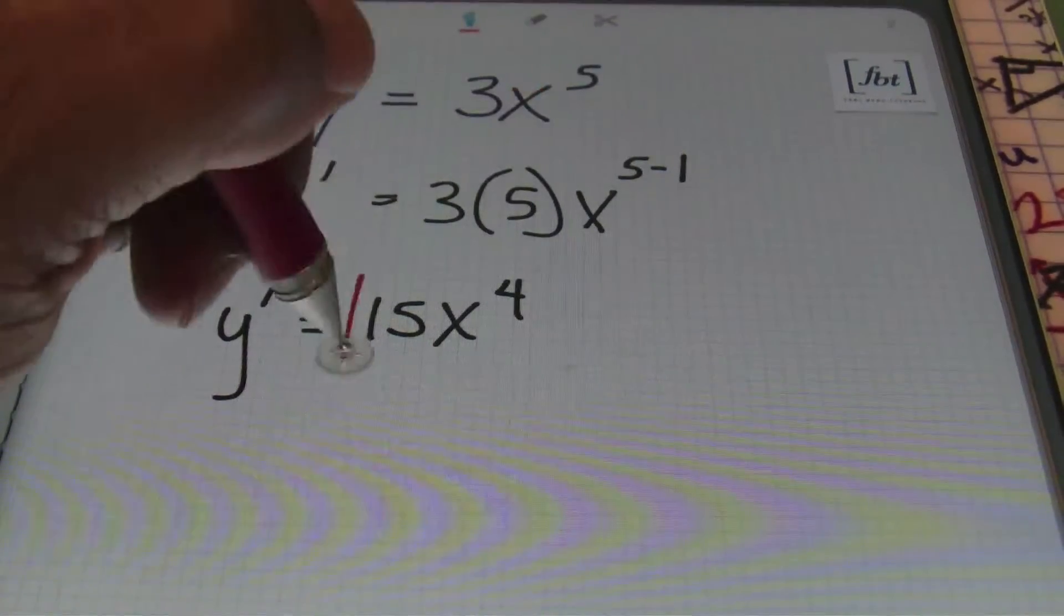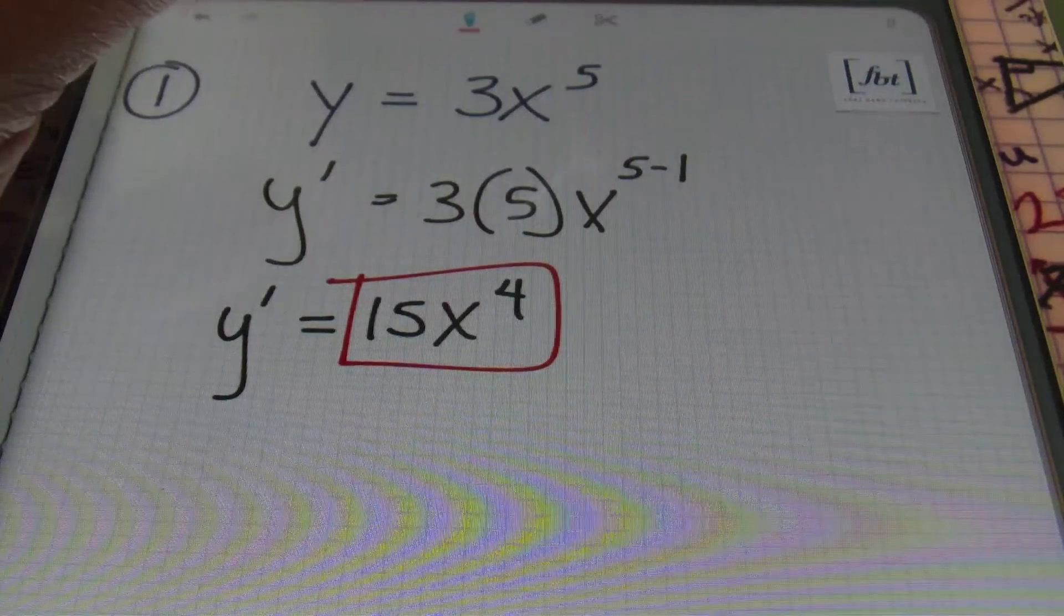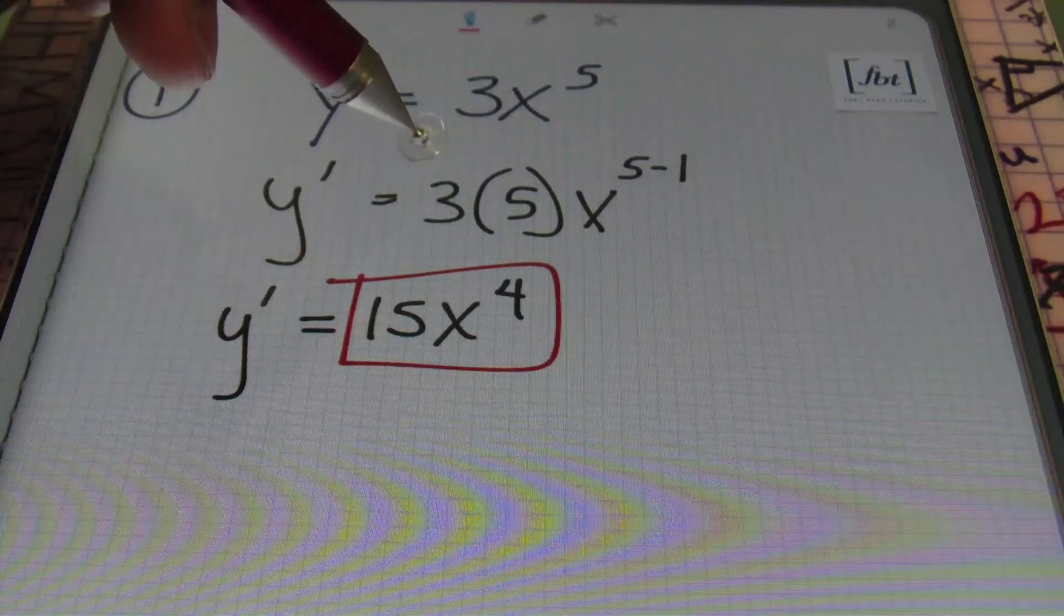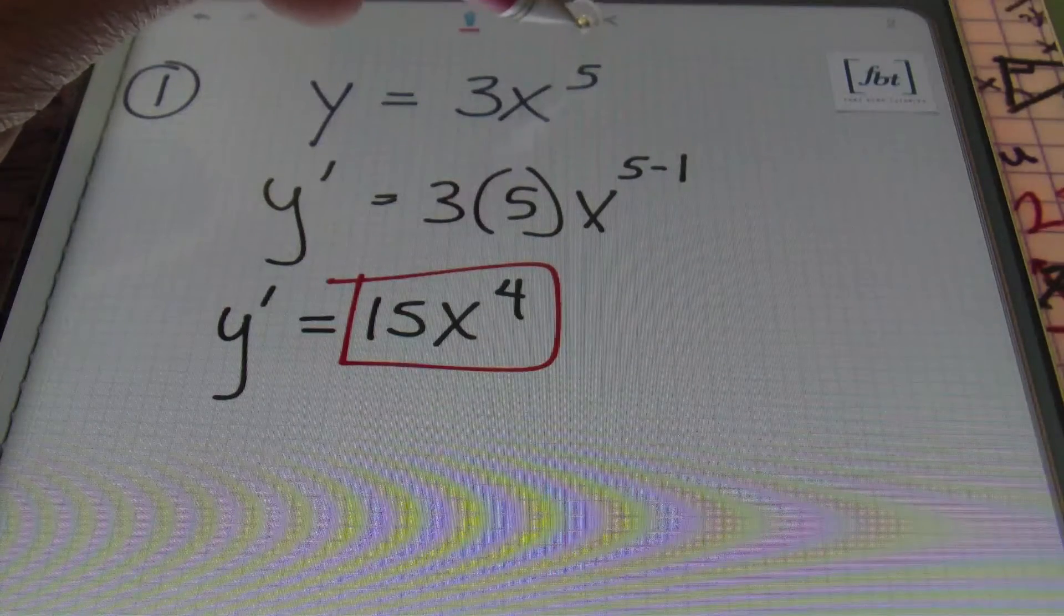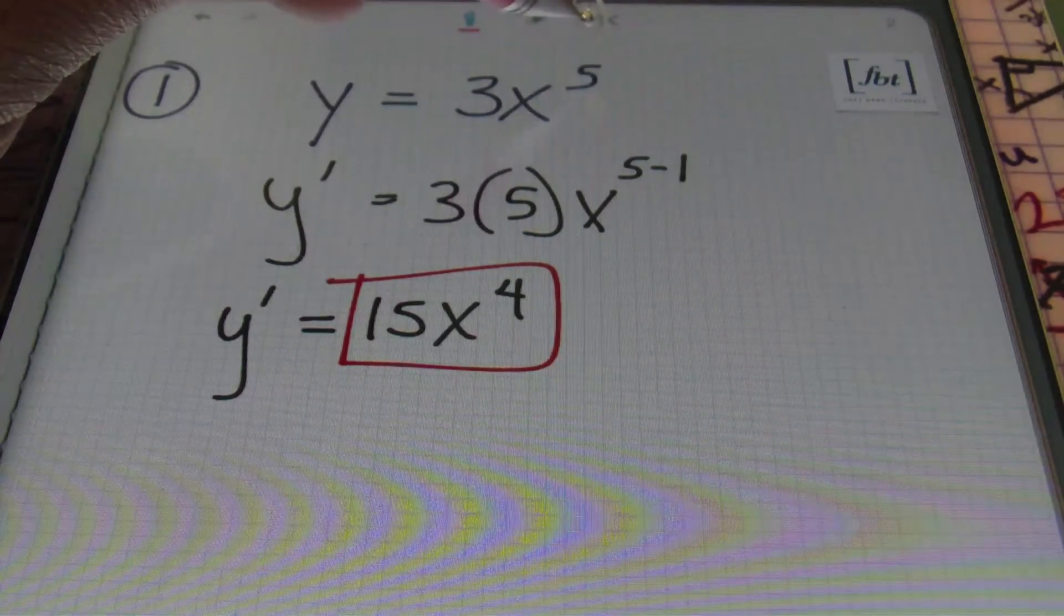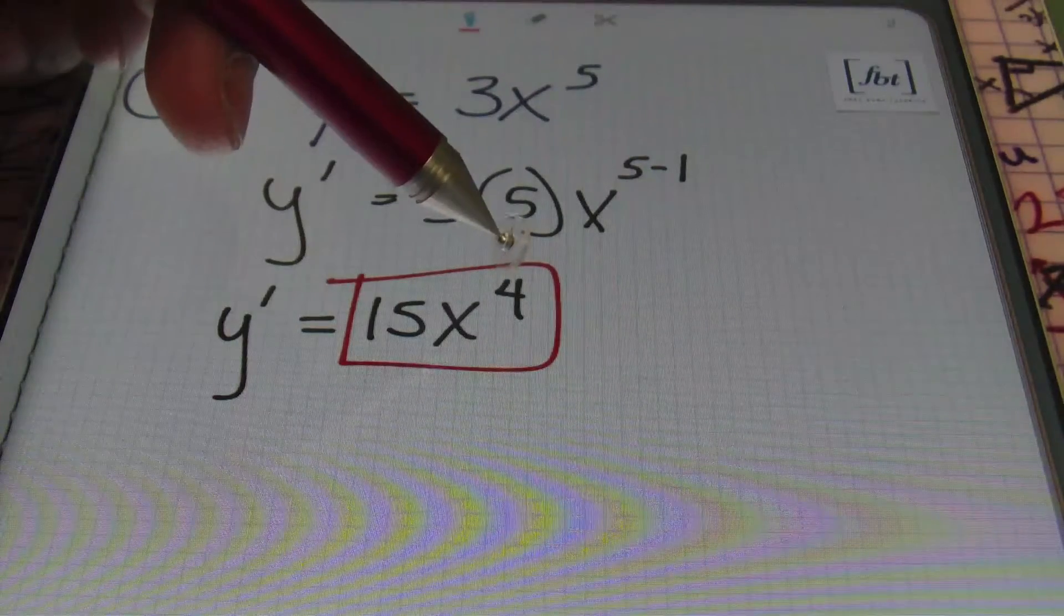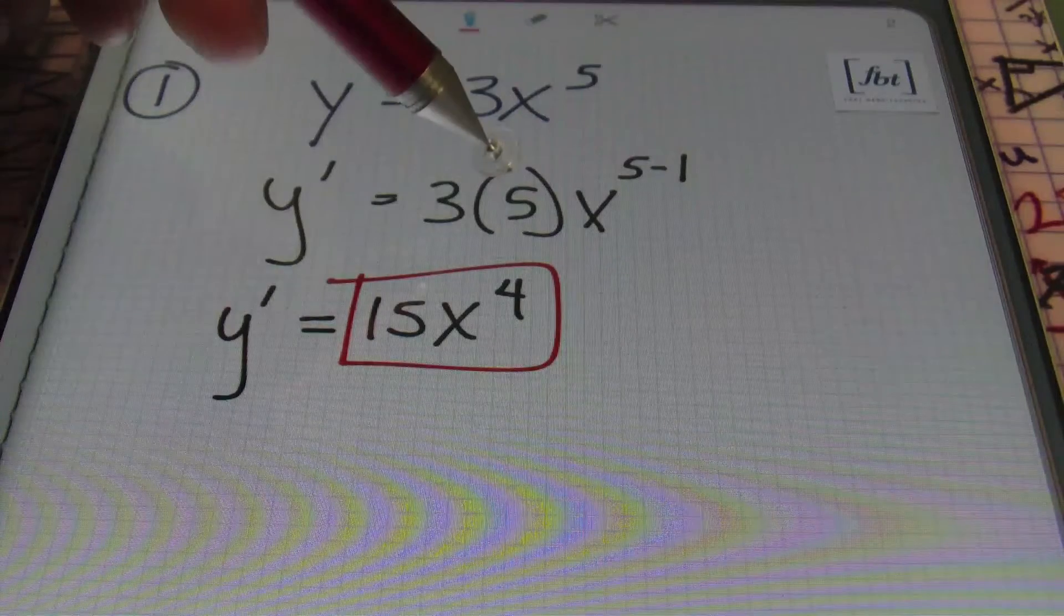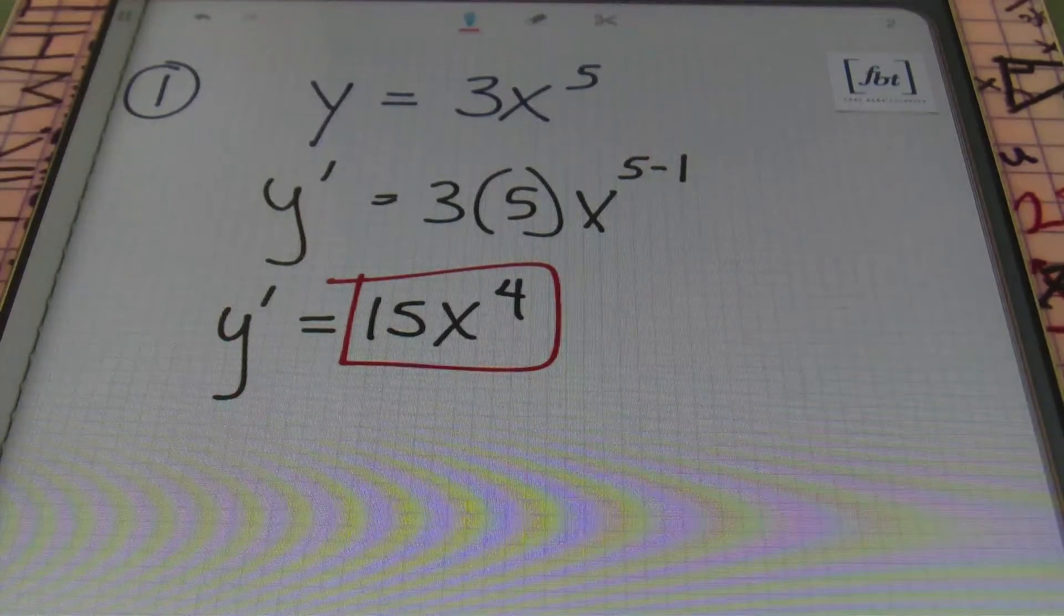Alright, so what happened here? We had an initial coefficient of 3. When using the power rule, that exponent 5 comes down in front and multiplies with that existing coefficient, whatever it may be. Then you'll always subtract 1 from that initial exponent's value, in this case it was 5. So I'll have 5 minus 1, will leave me with an exponent of 4. And multiplying 3 times 5, I end up with 15, and that's the answer. That's it, yeah.